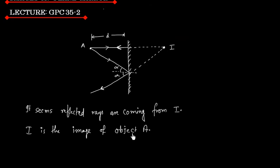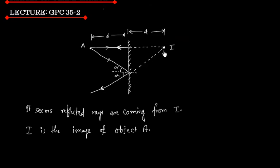We will prove that the distance of the image from the plane mirror is also D. We will also discuss that all reflected rays, when extended, will meet at point I.